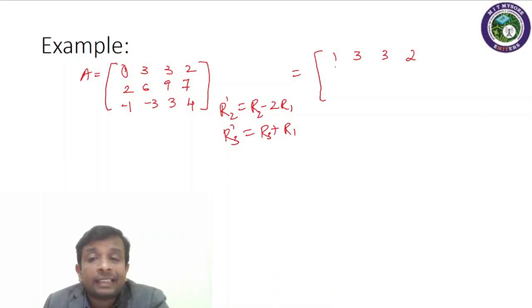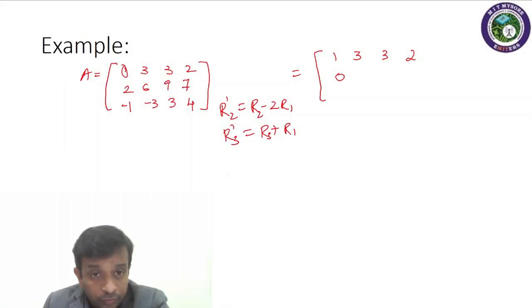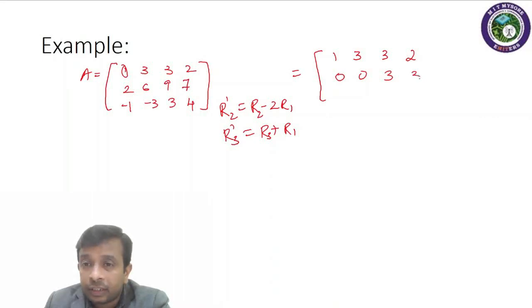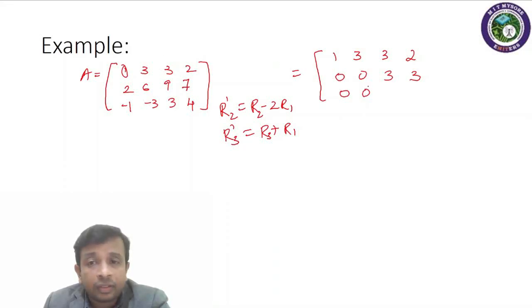Computing R2' = R2 minus 2·R1: first element 2 minus 2 = 0, then 6 minus 6 = 0, then 9 minus 6 = 3, and 7 minus 4 = 3. Computing R3' = R3 plus R1: minus 1 plus 1 = 0, minus 3 plus 3 = 0, then 3 plus 3 = 6, and 4 plus 2 = 6. So after these operations the matrix becomes: 1, 3, 3, 2 / 0, 0, 3, 3 / 0, 0, 6, 6.